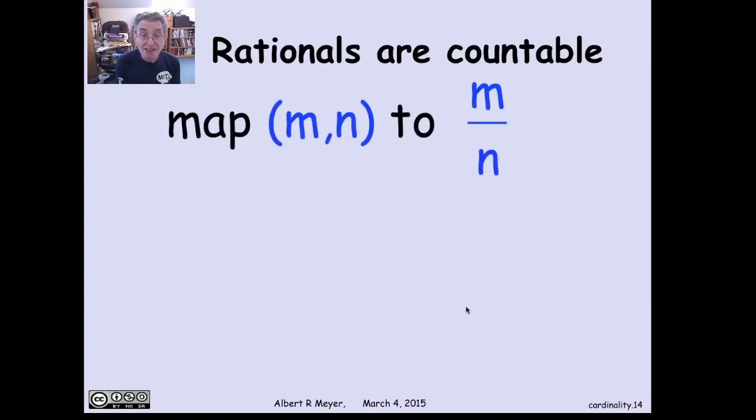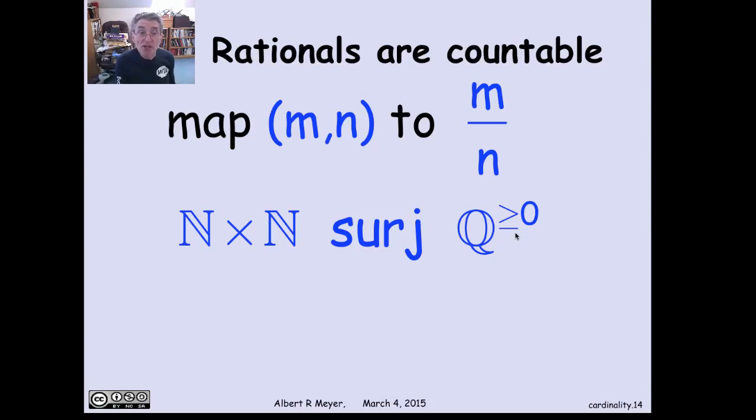Because we already know that the pairs of non-negative integers are countable. So I'm just going to map a pair of non-negative integers, (m,n), to the rational number m divided by n. Well, n might be 0. So if n is 0, just map all of those pairs to some favorite rational number, call it a half. And that gives us a nice surjective mapping because every rational number can be expressed as m over—at least every non-negative rational number.